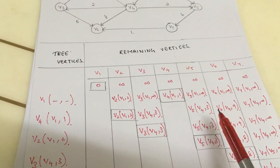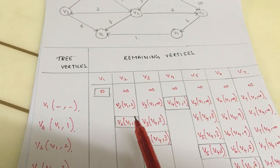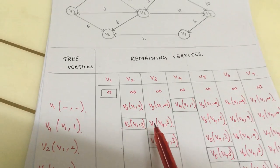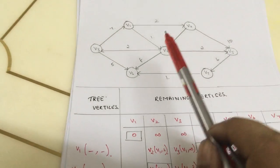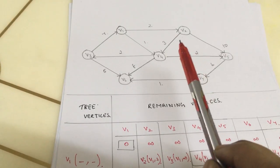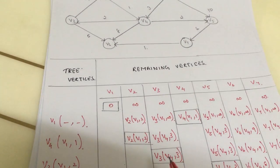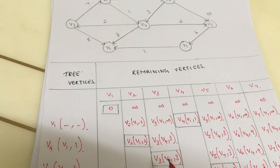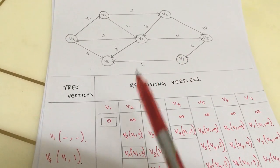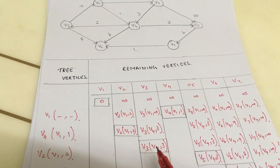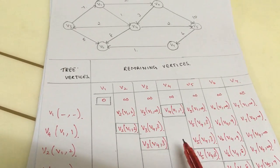From this entry, we will take the least value, which is v2, v1, comma, 2, and we will write it. From vertex v2, we will see the other vertices. v3 is not directed, therefore we will put the previous value. That is v4, comma, 3.